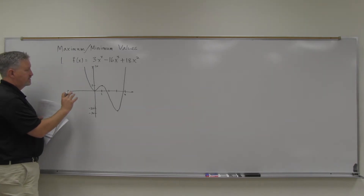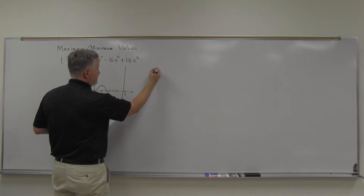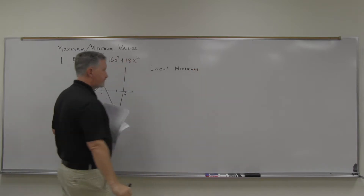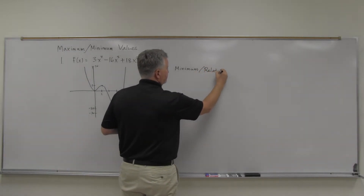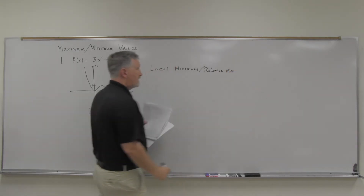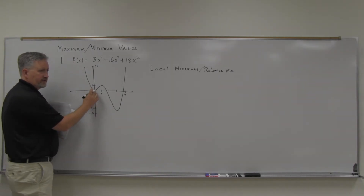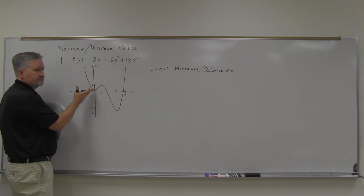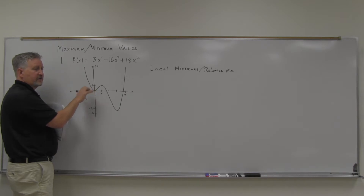Now, why do we consider those minimums? Technically, what we call them are local minimum and local maximums. What we mean by a local minimum is it's not a minimum everywhere, but it's minimum in a local sense — because if you look at the points around it, it is lower than the other points. And so that's why we consider it a minimum.